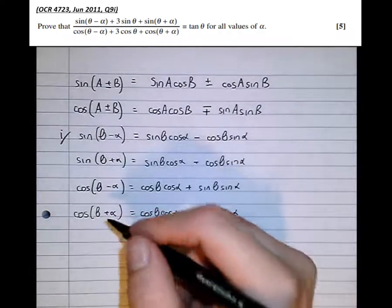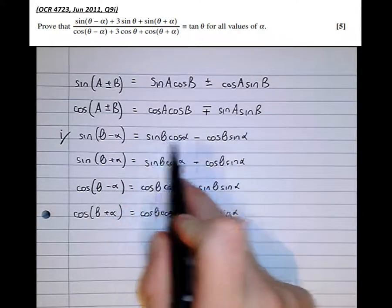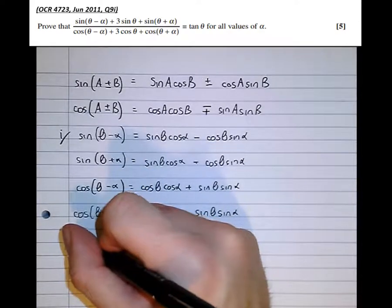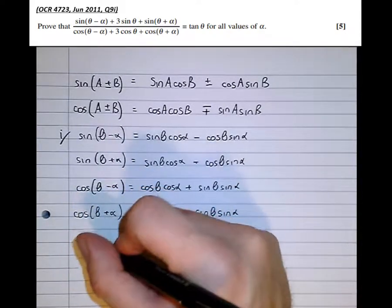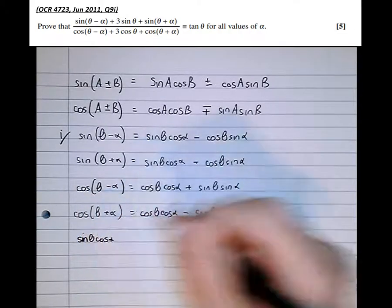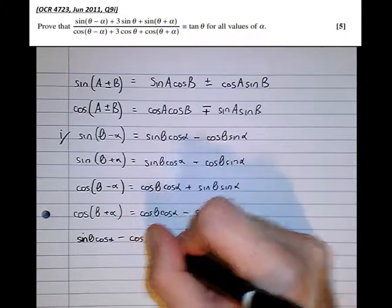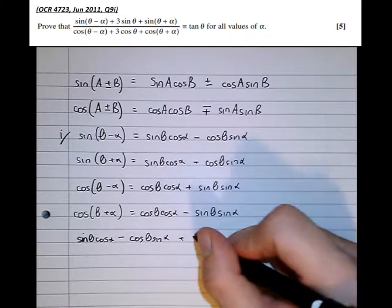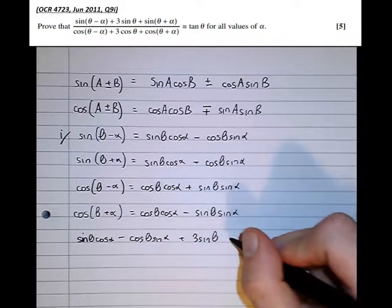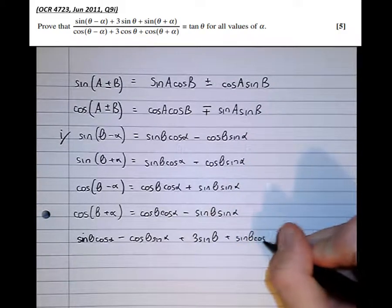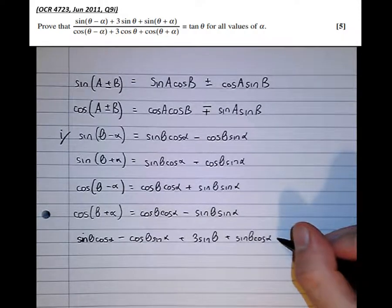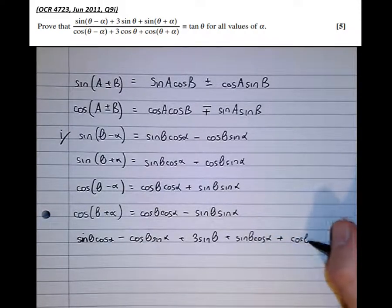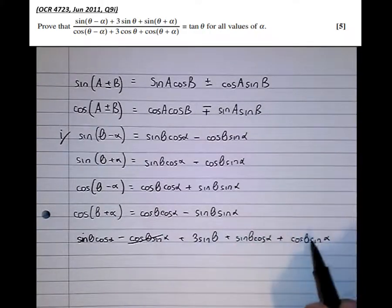Substituting into the numerator, we get: sine theta cos alpha minus cos theta sine alpha, plus 3 sine theta, plus sine theta cos alpha plus cos theta sine alpha. Notice that the minus cos theta sine alpha and plus cos theta sine alpha cancel.